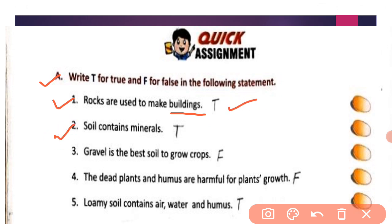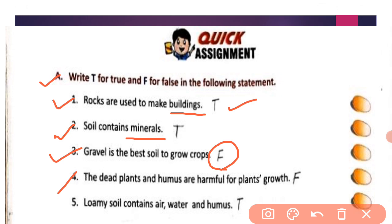Second: soil contains minerals — true. Third: gravel is the best soil to grow crops — no, it is false. Fourth: dead plants and humus are harmful for plant growth — false. Fifth: loamy soil contains air, water, and humus — yes, it is true.